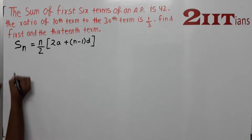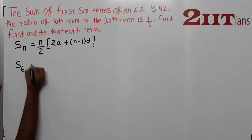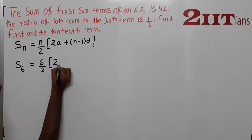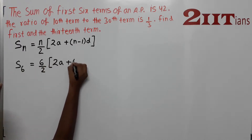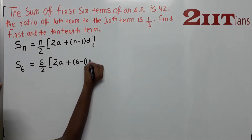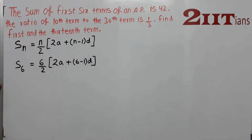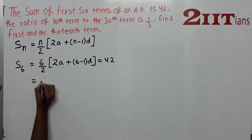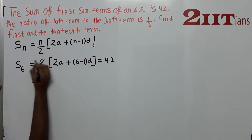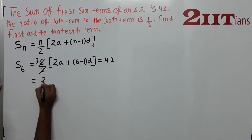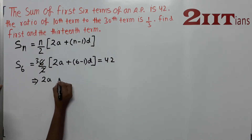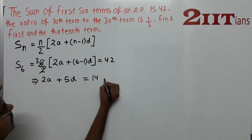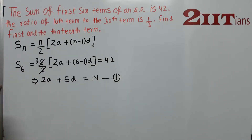We are given the sum of 6 terms. So S6 = 6/2 into (2A + (6-1)D) = 42. Solving this, we get 3 into (2A + 5D) = 42, which gives us 2A + 5D = 14. This is our Equation 1.